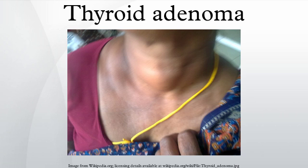The typical thyroid adenoma is a solitary, spherical, and encapsulated lesion that is well demarcated from the surrounding parenchyma. The color ranges from gray-white to red-brown, depending upon the cellularity of the adenoma and the colloid content. Areas of hemorrhage, fibrosis, calcification, and cystic change, similar to what is found in multinodular goiters, are common in thyroid adenoma, particularly in larger lesions.